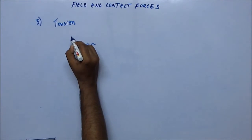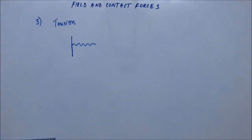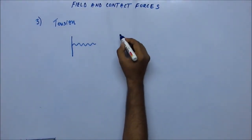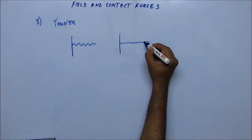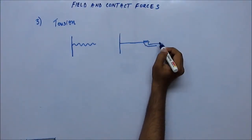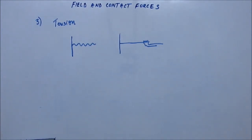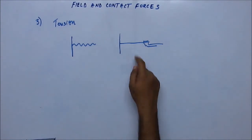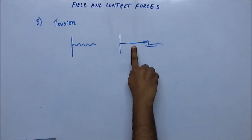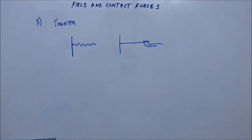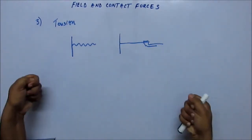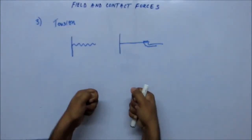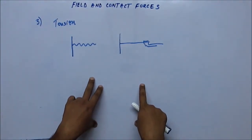Suppose there is a string attached to the wall in a slack position. When we stretch the string, it becomes taut and straight. We see that there is some tension developed in the string due to little elongation. The string tries to come back to its relaxed, unstressed condition. At the molecular level, molecules have been pulled apart from each other, and due to attractive force they want to come back.